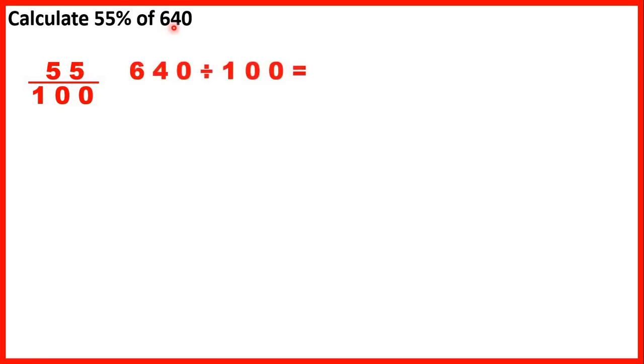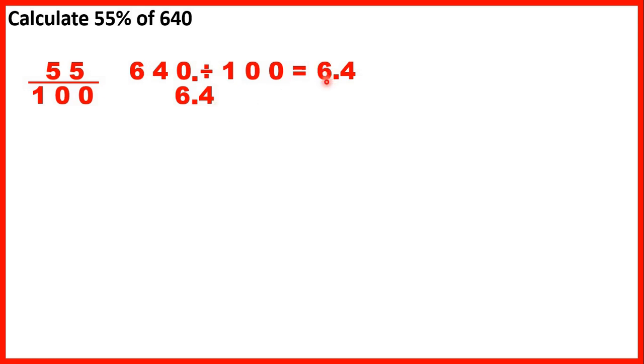Calculate 55% of 640. A percentage is a fraction with a denominator of 100. To find a fraction of a number, we divide by the denominator and then multiply by the numerator. First we work out 640 divided by 100: to divide by 100 we move the digits two squares to the right, giving us 6.4.